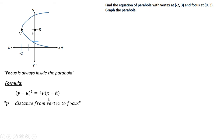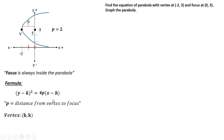To solve for p, that's the distance from the vertex to the focus. You just have to count to get the value of p. Start counting on the next point: one, two. So therefore our p is two.